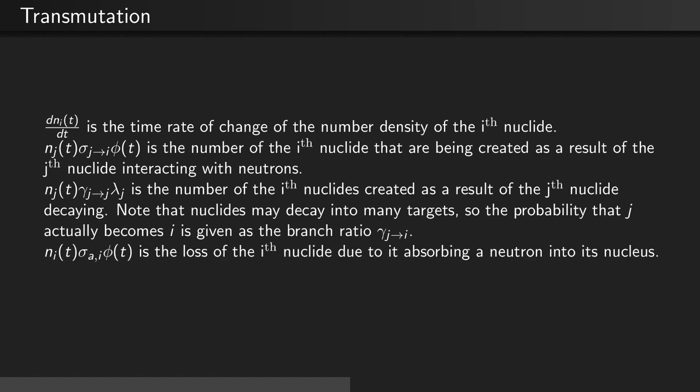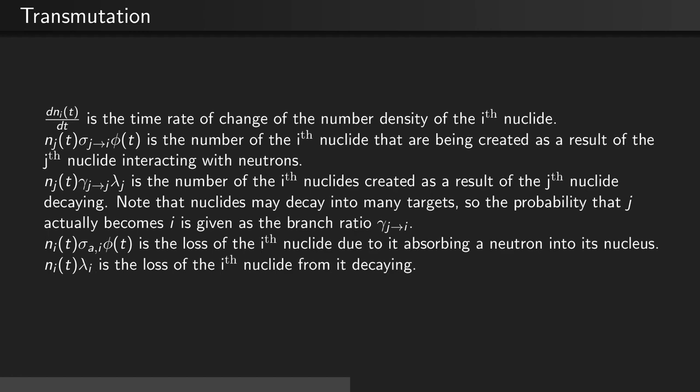Ni(t) σa,i φ(t) is the loss of the i-th nuclide due to the i-th nuclide absorbing a neutron into its nucleus and becoming some other nuclide. Similarly, Ni(t) λi is the loss of the i-th nuclide due to radioactive decay.